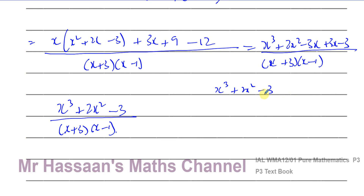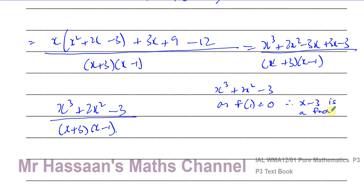Using the factor theorem from P2: we substitute x equals one and get one plus two minus three equals zero. So f(1) equals zero, therefore x minus one is a factor. Now I can use either algebraic long division or comparing coefficients to find the other factor.